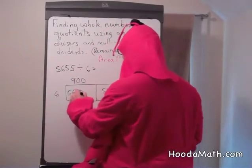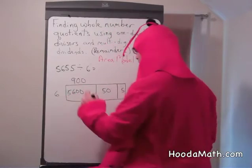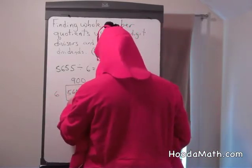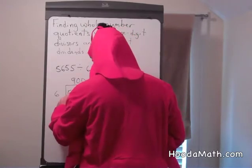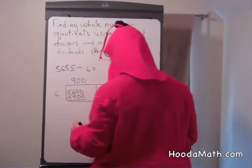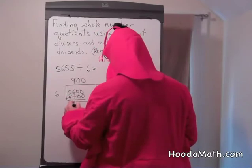So we'll put 900 to account for the zeros. 6 times 900 is 5,400. We subtract and what we have left is 200.